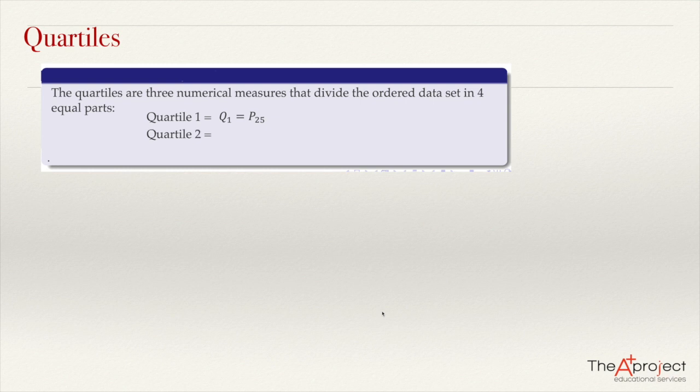Quartile 2 is exactly in the center of the data set, symbolized Q2. It is the same as percentile 50, or the median, which is exactly in the center of the data.